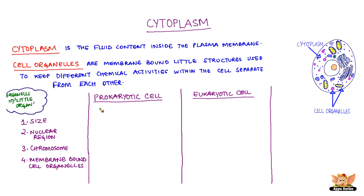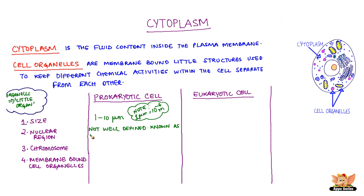Now, let's look at the difference between a prokaryotic cell and a eukaryotic cell. Prokaryotic cells are relatively smaller in size compared to eukaryotic cells. Their size ranges from 1 to 10 micrometers. The nuclear region is not well defined, which is termed as nucleoid. This contains a single chromosome. Membrane-bound cell organelles are also absent. Cells of bacteria are prokaryotic.